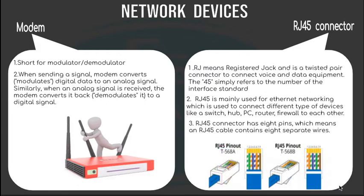The RJ45 cable is an 8-wire connector which connects the computer on the LAN. If you look at it closely, these numbers make a significant difference — there are eight pins. Each pin is identified with the help of a color combination, and that's how it's differentiated. RJ45 is basically used for Ethernet networking so that your device can transfer data from one area to another, whether through a switch or a hub.